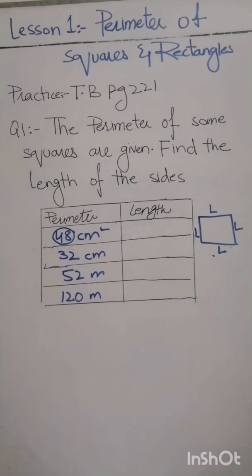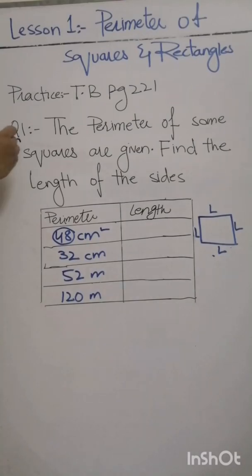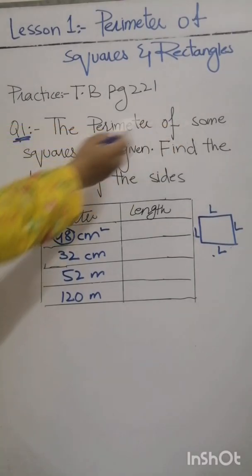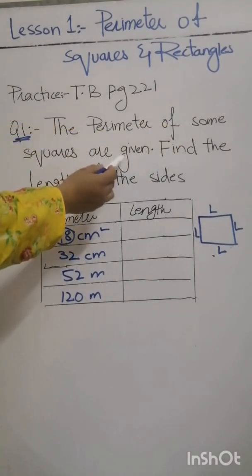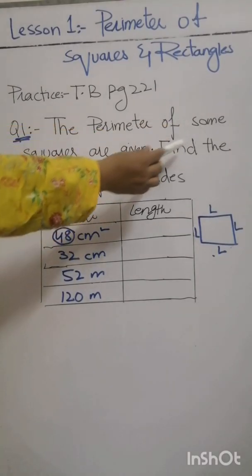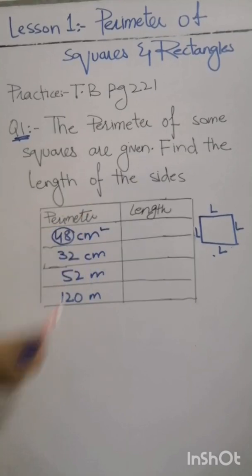Bismillahirrahmanirrahim. Assalamu alaikum students. We continue our topic: perimeter of squares and rectangles. Now we have our practice questions from our textbook page 221. Question number one: the perimeter of some squares are given, find the length of the sides.